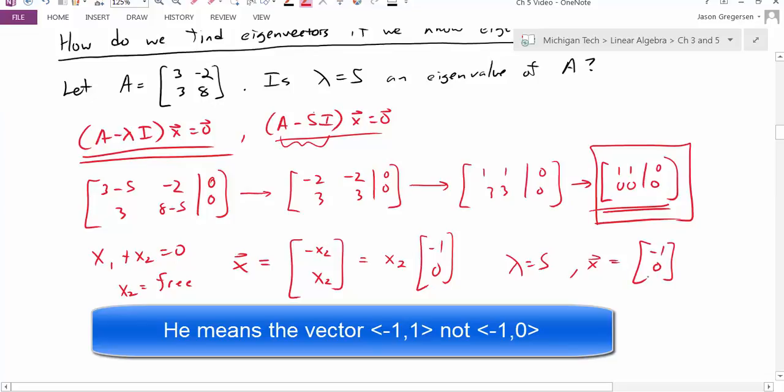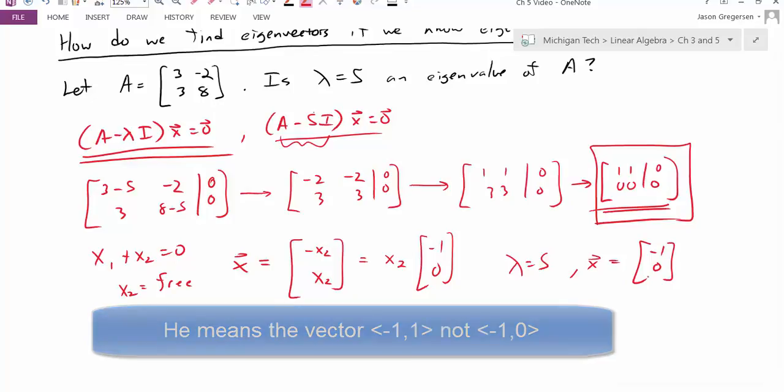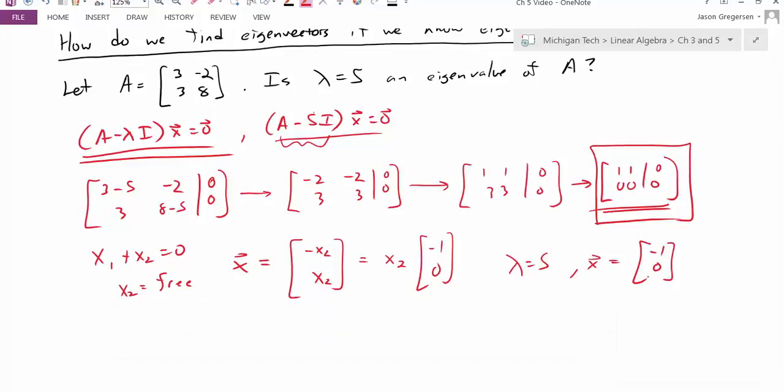But also the solutions to a homogeneous equation would also be the null space. So that means the set of all these eigenvectors is really forming a vector space, and I will call that the eigenspace. And so when I say I found an eigenvector that's [-1, 1], really I'm also finding a basis for this eigenspace.